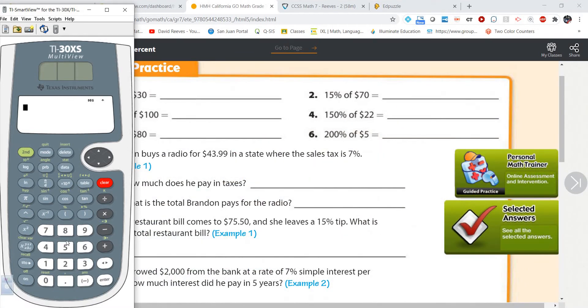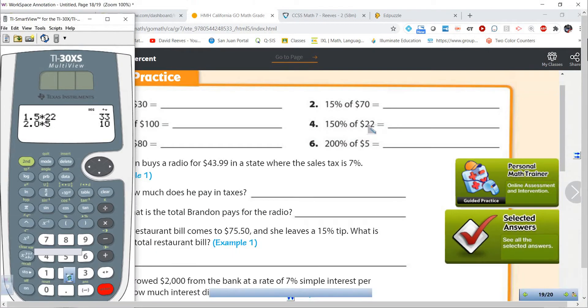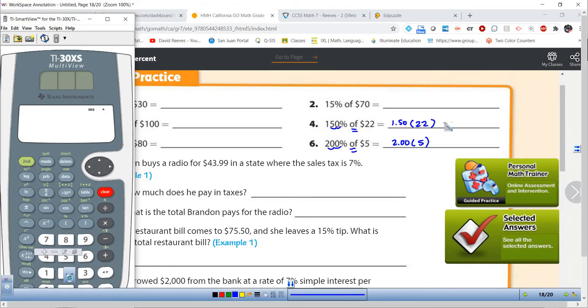So 150% of 22 is going to become 1.50, and remember that of tells us we're going to be multiplying by 22. 200% of $5 is going to be 2.00 times 5. I'm going to go to my handy dandy calculator and do 1.5 times 22, and 2.0 times 5. The answer to my first one is 33, and this one was 10.